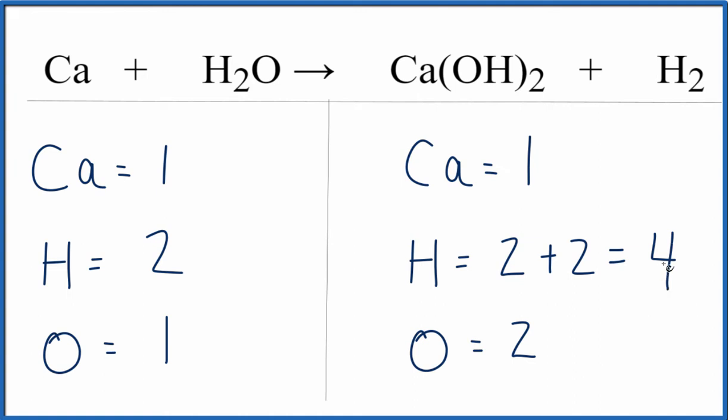So the equation's not balanced. Why don't we fix the hydrogen atoms here? So we have four here and two here. If I put a two in front of the water, two times two, that'll fix the hydrogen atoms.